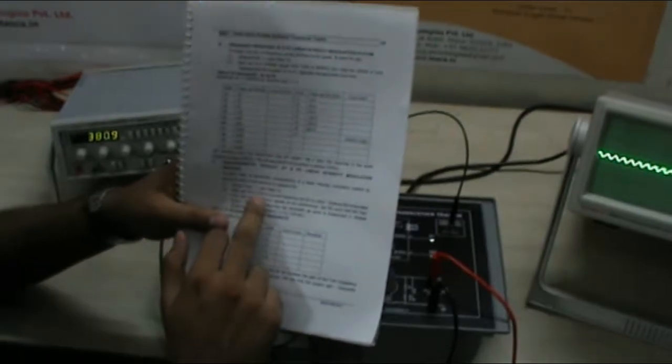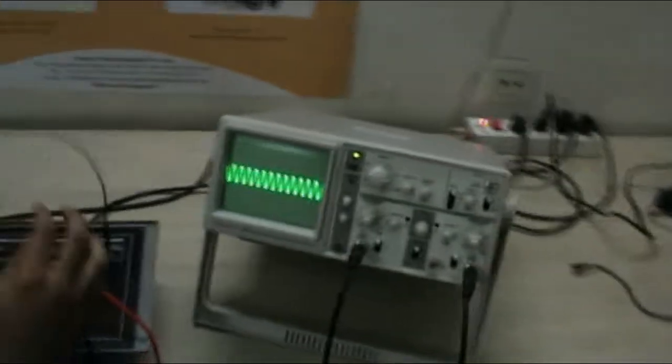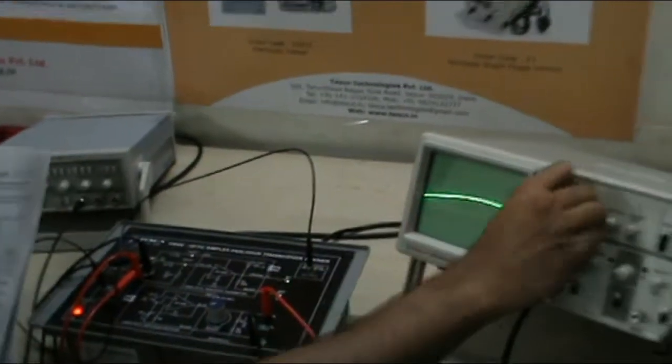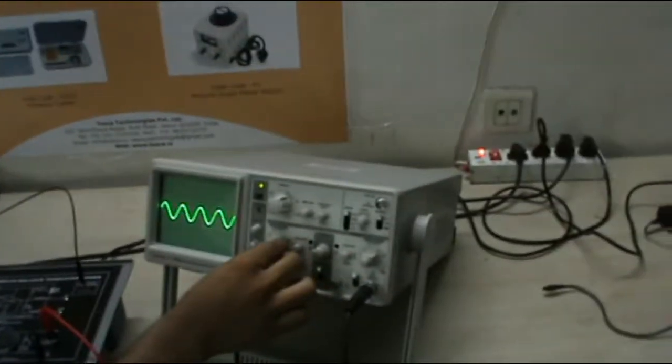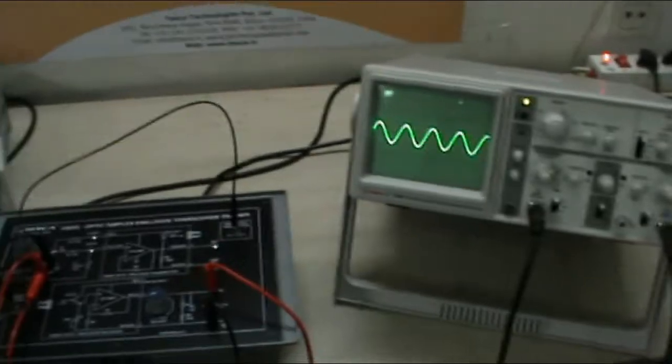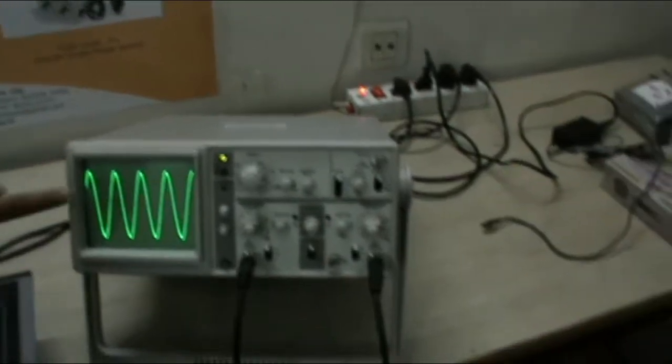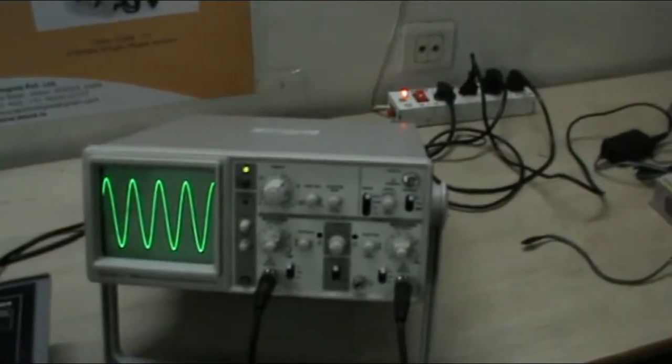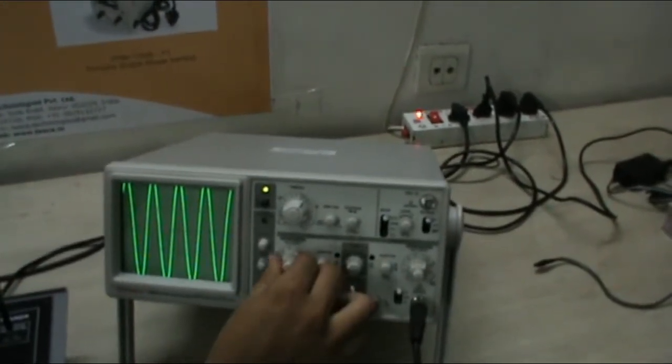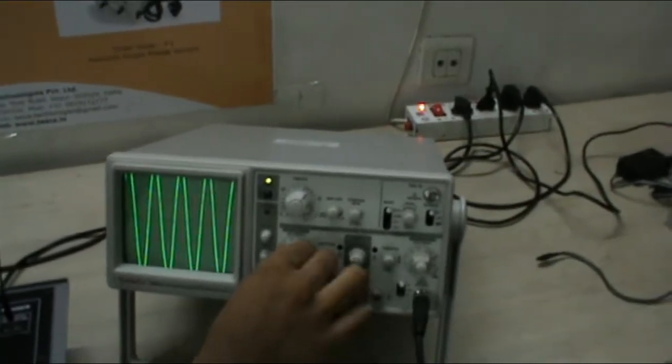Now in this set VIN to 500mV. Take it to channel 1. We have to set VIN to 500mV. As it is 50mV per division, by increasing the amplitude, making it to 10 blocks. Now this is my 500mV peak to peak.